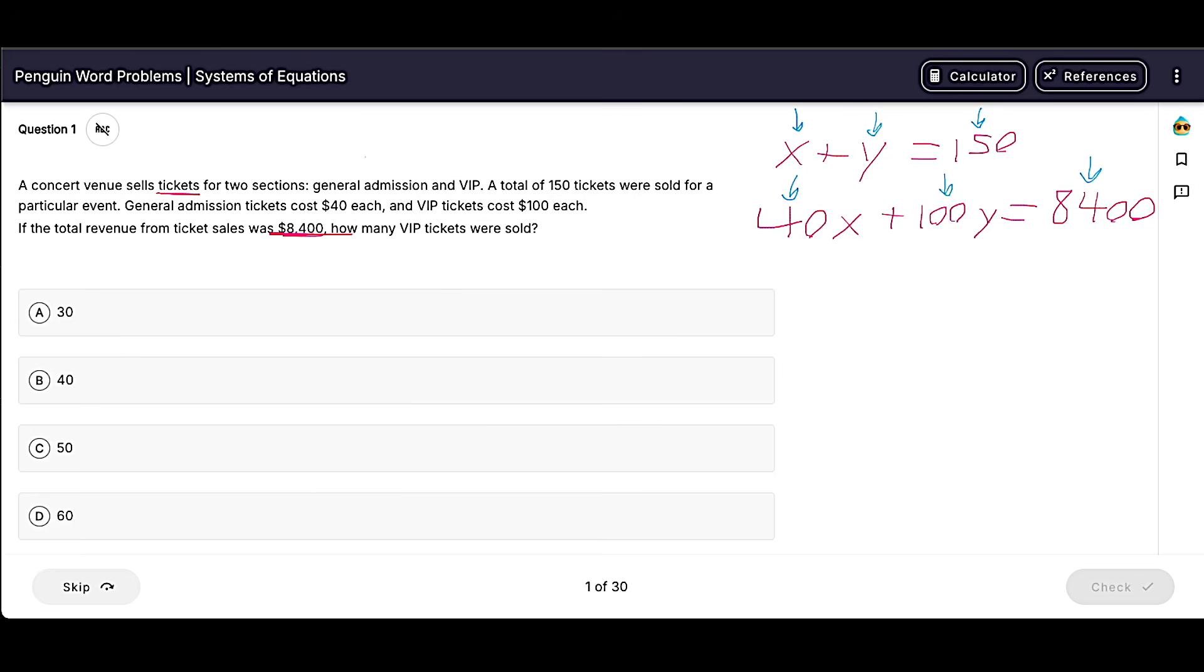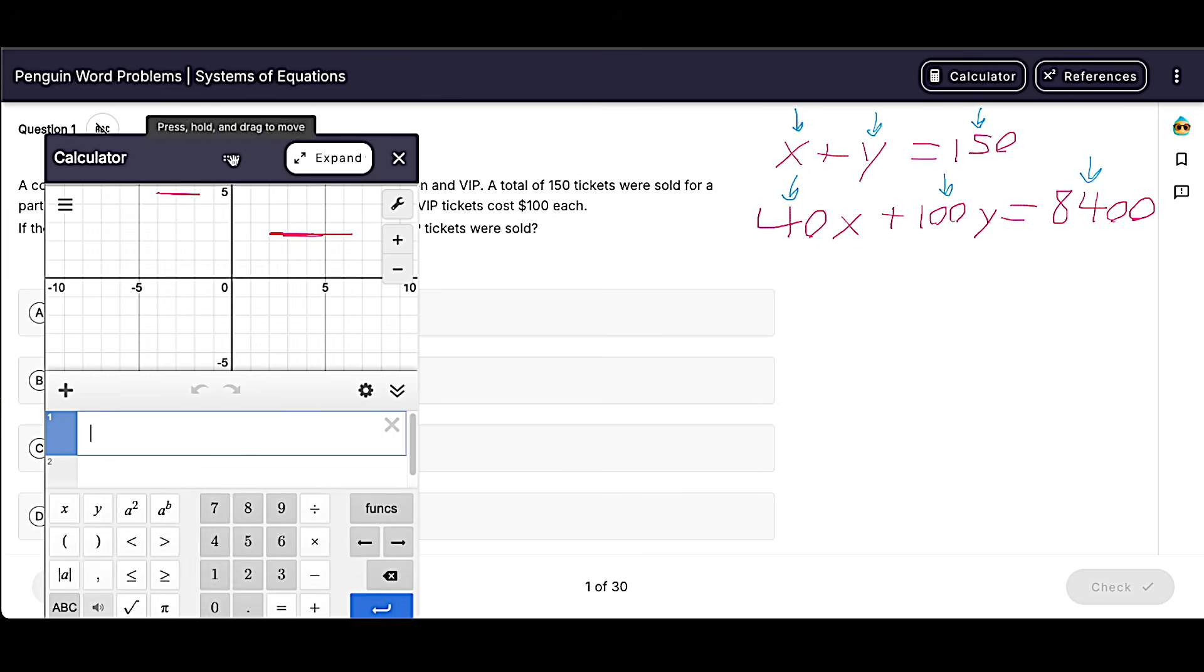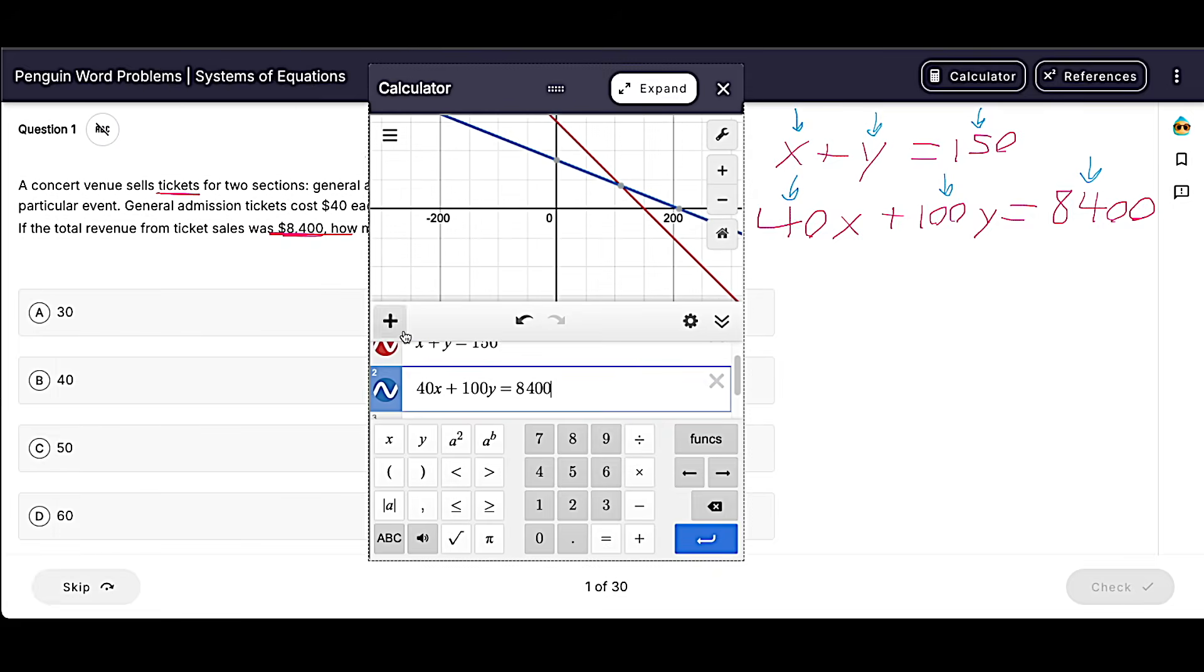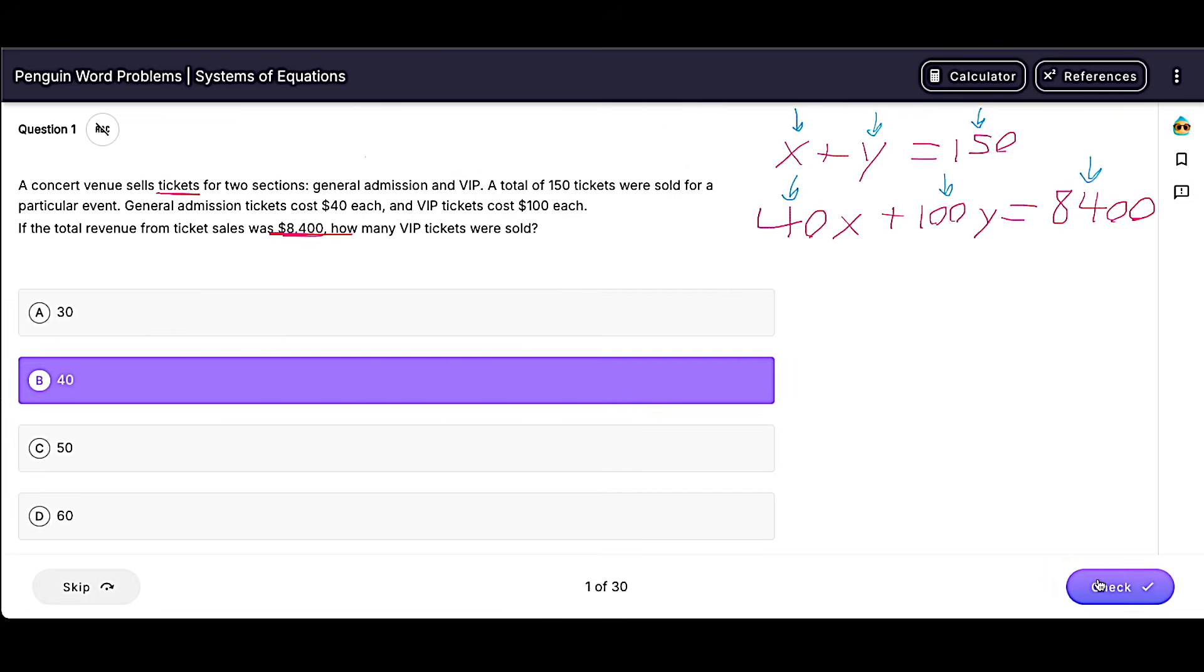And of course, we can just plug this into Desmos. And we're looking for our intersection here, 110, 40. So our answer is going to be 40.